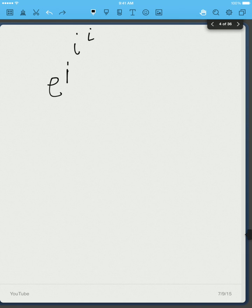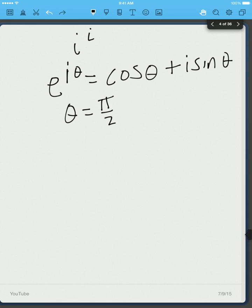So if we want to represent i as a complex exponential, then if theta is equal to pi over 2, we find that e to the i pi over 2 is just equal to i, because cosine of pi over 2 is 0 and sine of pi over 2 is 1.